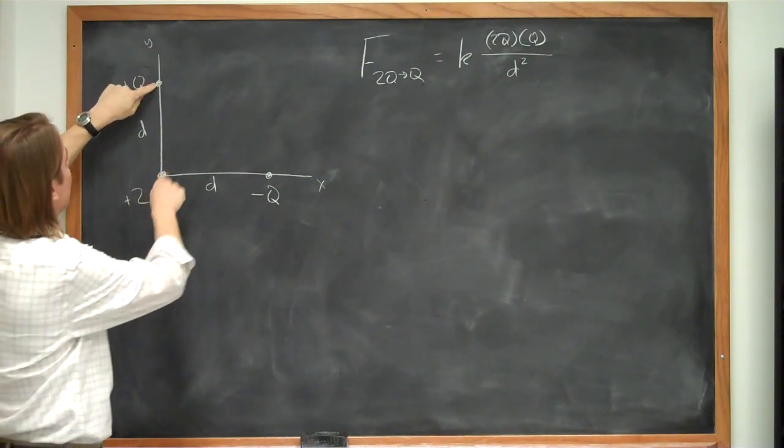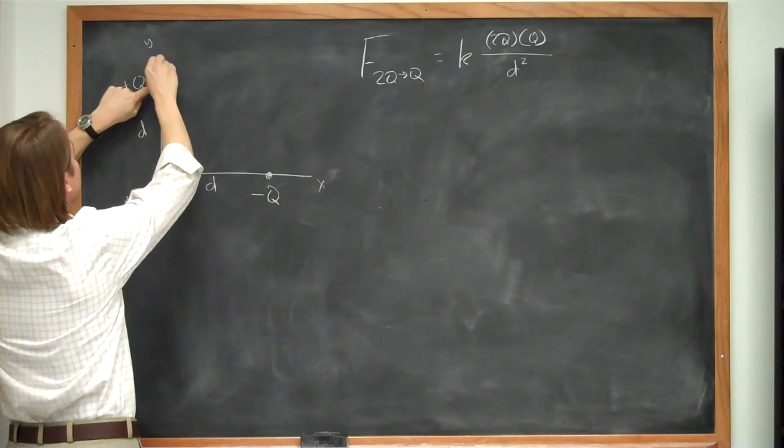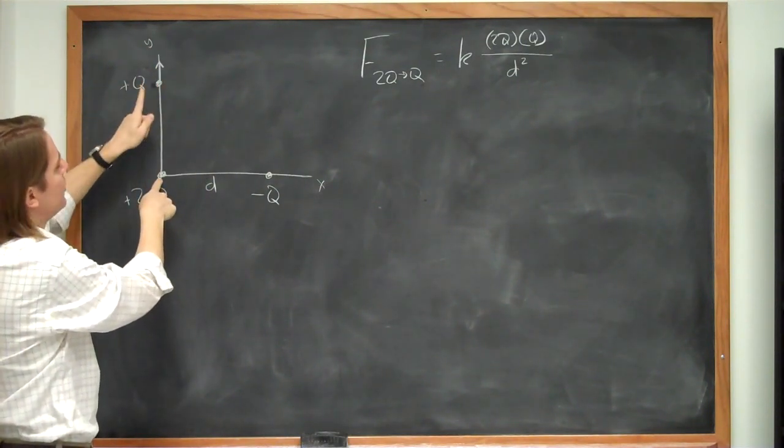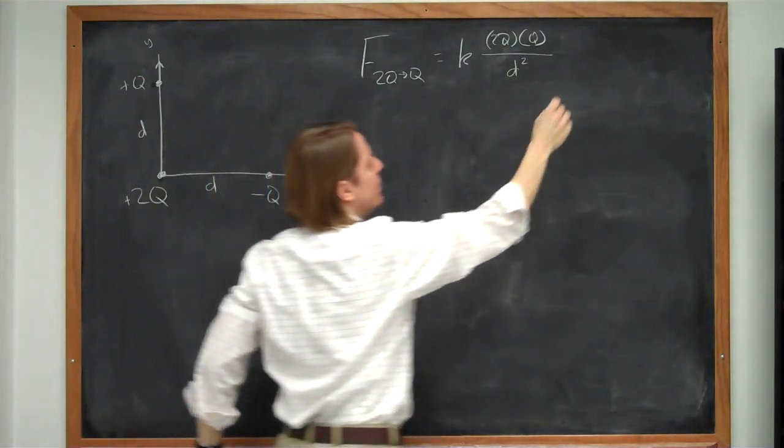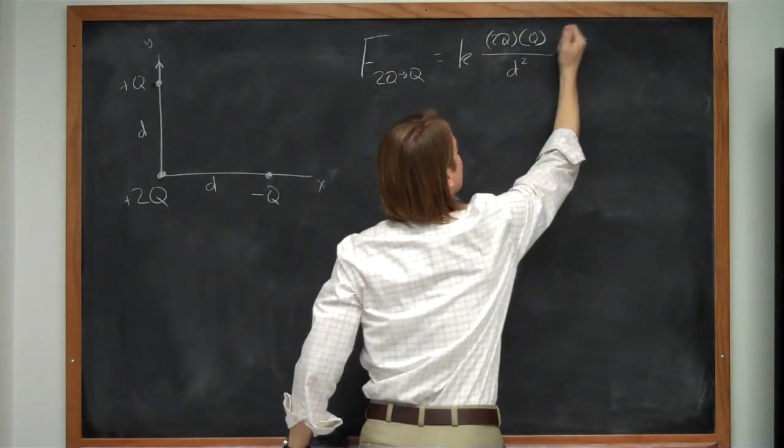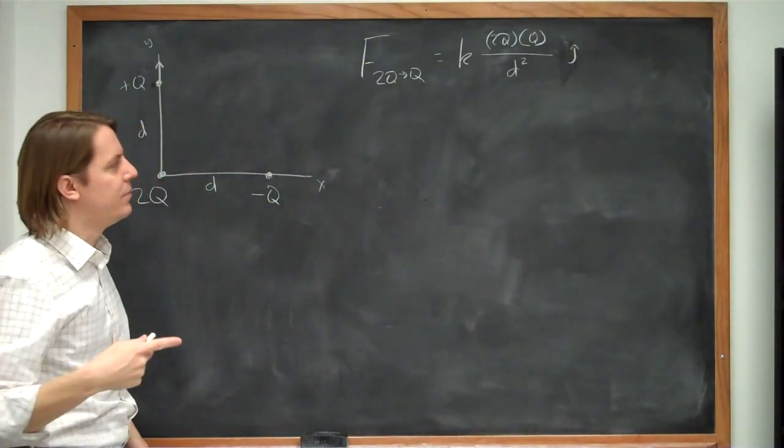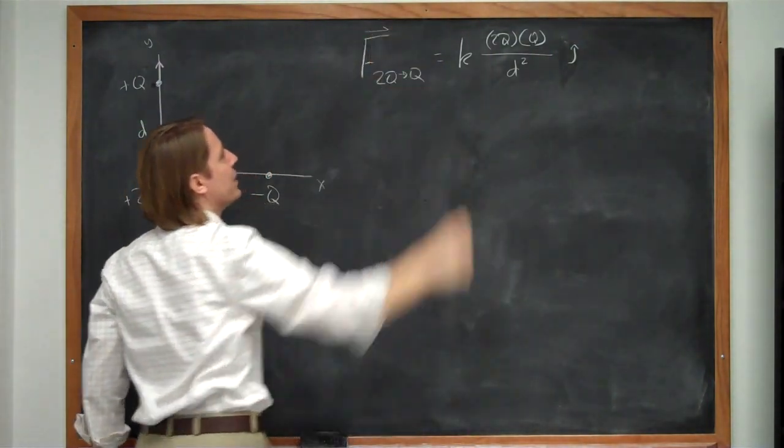so we look at it and we know that it's going to be a vector pointing this way because they're both positive, so it's a repulsive force. So this one goes in the positive y direction. So to make it a vector, all we have to do is put a j hat on there. So j is the unit vector on the y-axis, so now we have made this a vector.